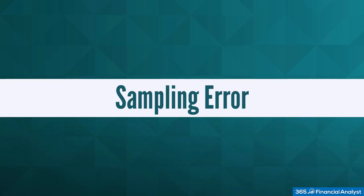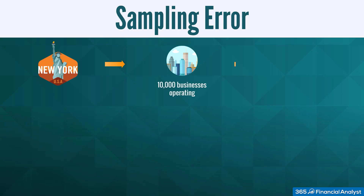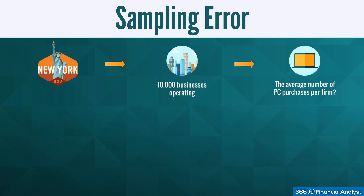In the example provided earlier, we said that there are two ways to obtain information about the average number of PCs acquired per year by each company in a given city. The first one is to knock on the door of every company, so to speak — that is, to contact them via phone or email.